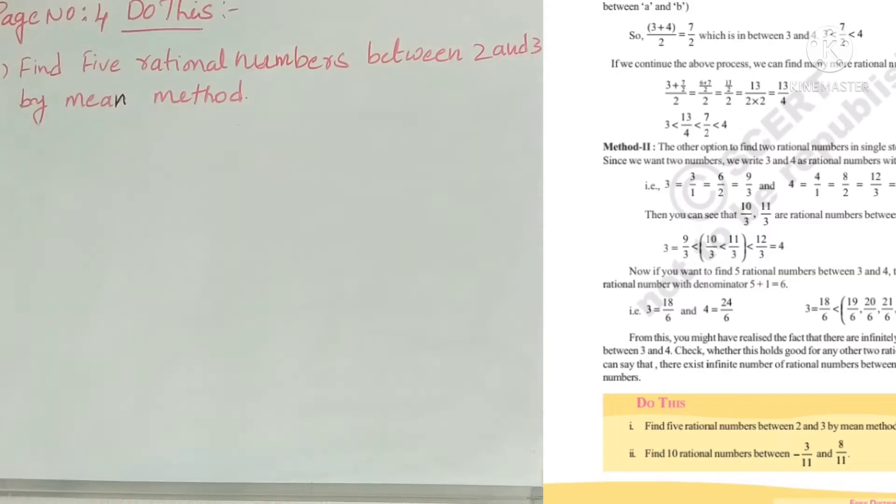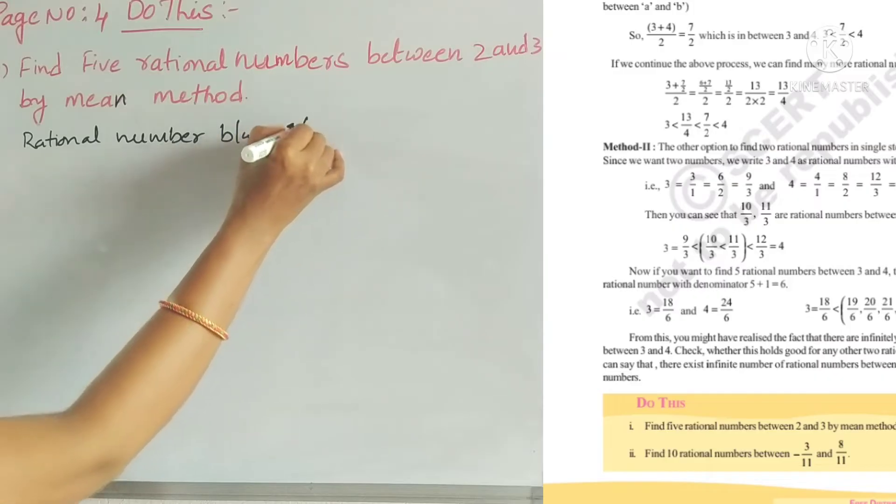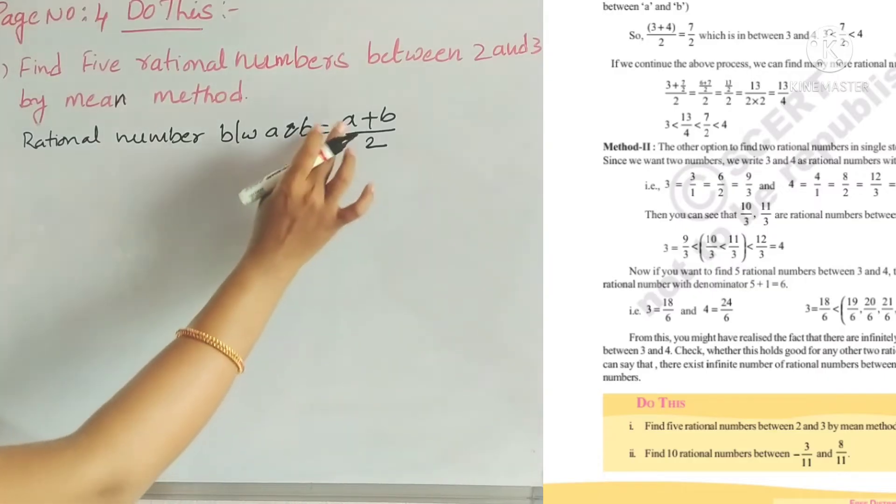We have a particular method called the mean method. If a and b are any two rational numbers, then the rational number between a and b is equal to the mean: (a + b) divided by 2.